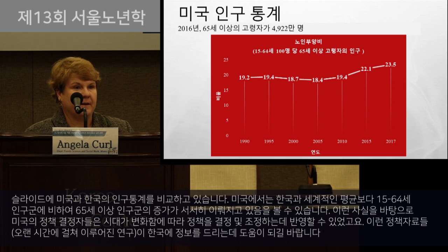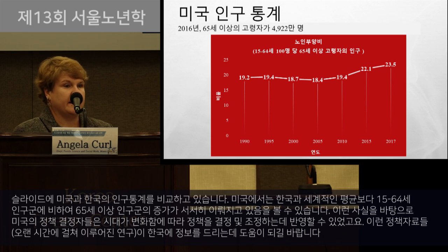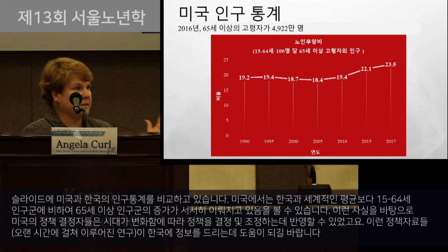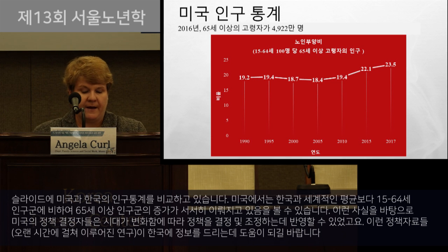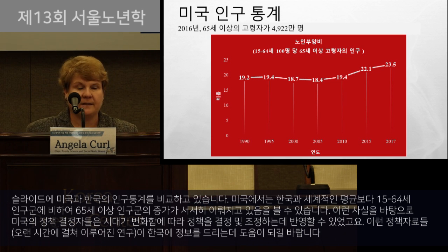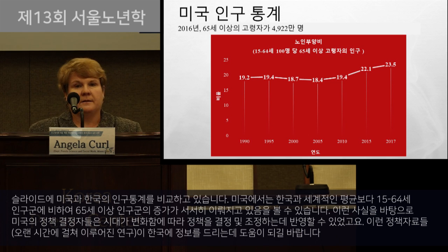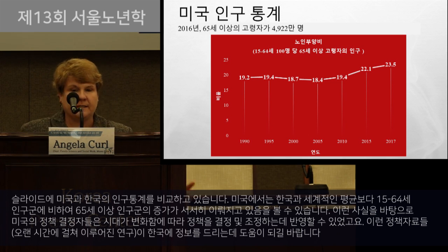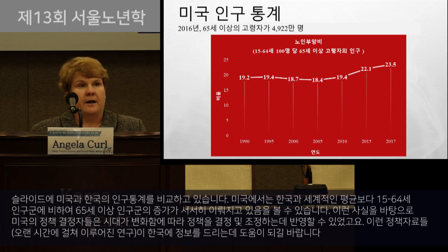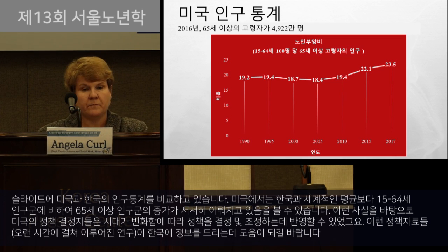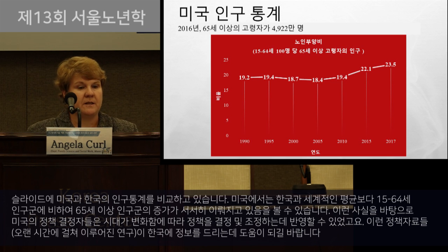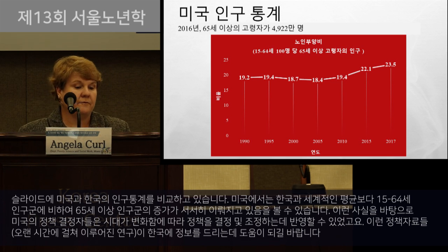I have this slide on U.S. demographics so you can see how the United States compares to South Korea in terms of demographics. The percentage of people over the age of 65 has been gradually increasing compared to people age 15 to 64. This gradual increase has allowed U.S. policymakers to make policy adjustments and plans over time, and hopefully some of these policies will be informative.